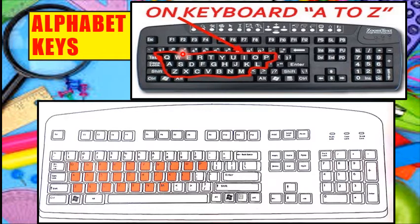Children, do you know, when we count A, B, C, D till Z, how many letters are there? Count and see. There are 26 letters or alphabets from A to Z. So, the number of alphabet keys are 26. The alphabet keys are used for typing letters and words.